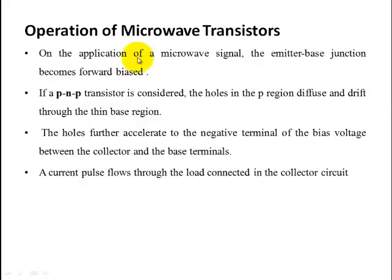When a microwave signal is applied as input, the emitter-base junction becomes forward biased. For a PNP transistor, holes in the P region diffuse through the thin N-type base region. The holes further accelerate toward the negative terminal of the bias voltage between the collector and base. A current pulse flows through the load connected in the collector circuit, and output current is obtained.